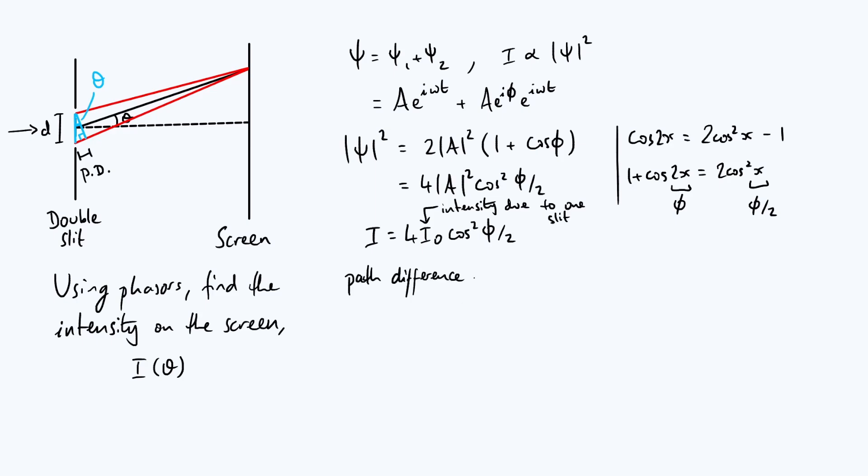It then follows from trigonometry that the path difference, the one that I marked on to my diagram, is approximately d sine theta, because the hypotenuse of that blue triangle is just d.